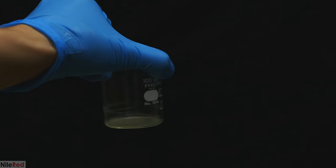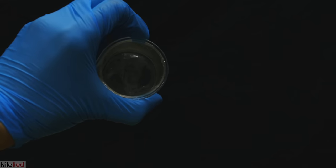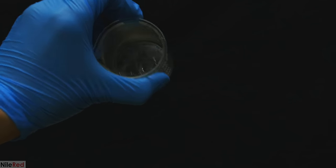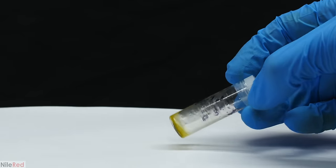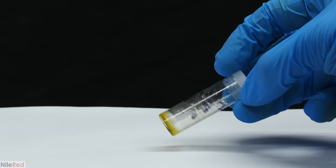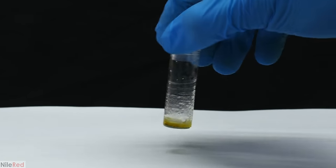Cadaverine has a melting point of around 9°C, so it makes sense that we're left with a goo and not a solid. With a little bit of skill, the cadaverine was transferred from the beaker to a small vial.